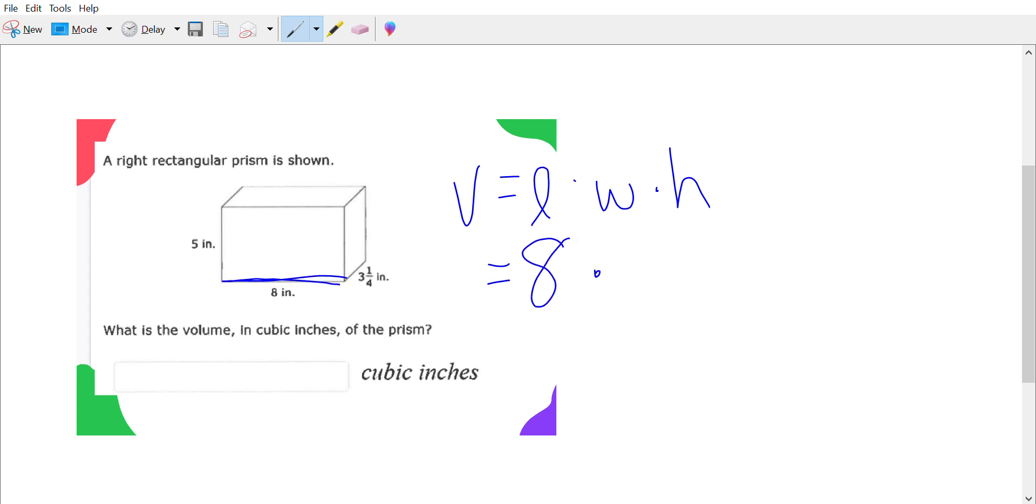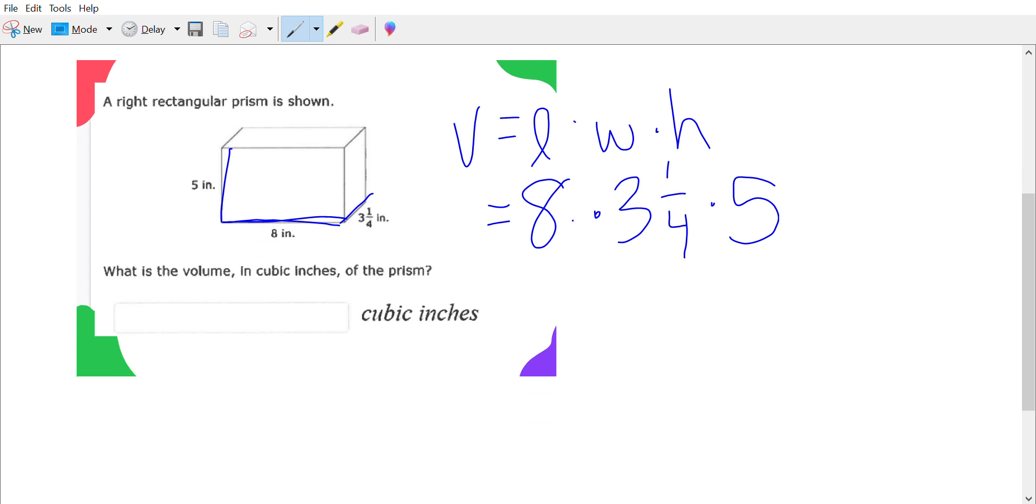Our width is three and a fourth, and our height is five. When you're doing multiplication, you can do it in any order. So we're gonna go ahead and multiply eight times five first because that's easier. Eight times five is 40. 40 times three and a fourth.